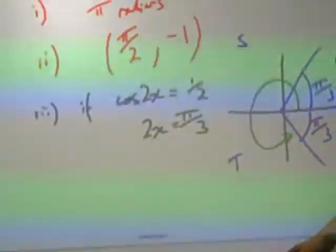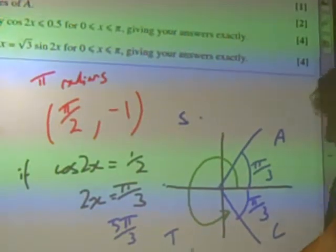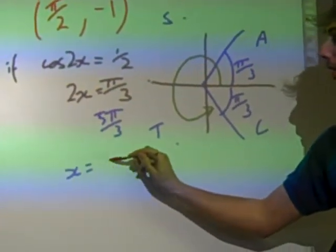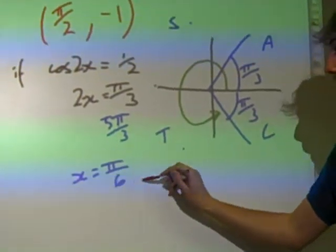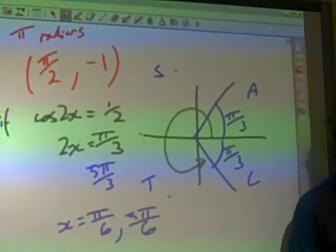It's π. Remember, we're looking for 2x. So although x is between 0 and 180, 0 and π, 2x is between 0 and 2π. So we count these round. And that would be the other value that we look for, which is 1, 2, 3, 4, 5 π by 3. So our other value is 5π by 3. The final thing we have to do is to divide by the 2. So x is π over 6.